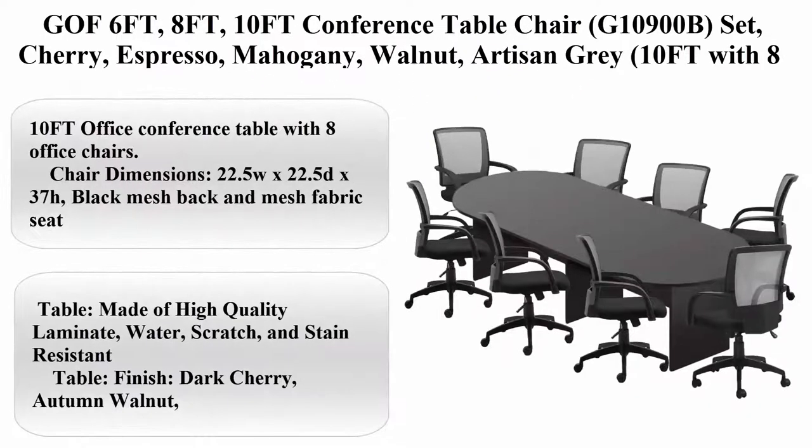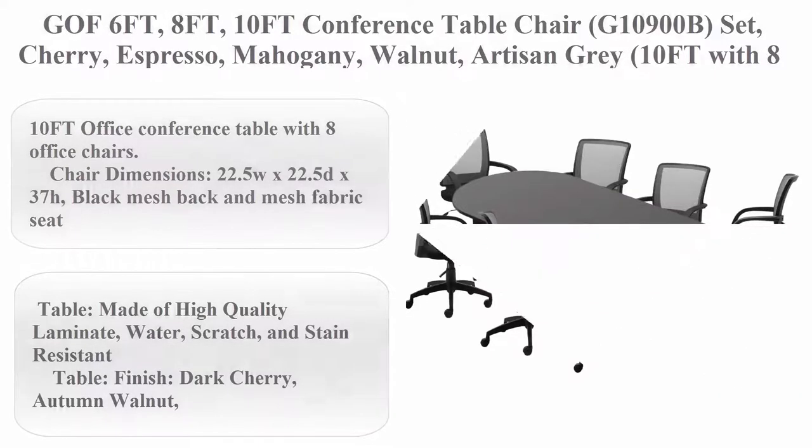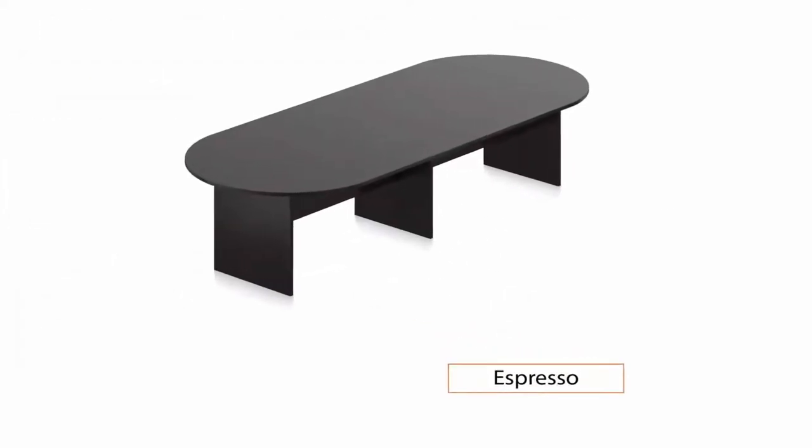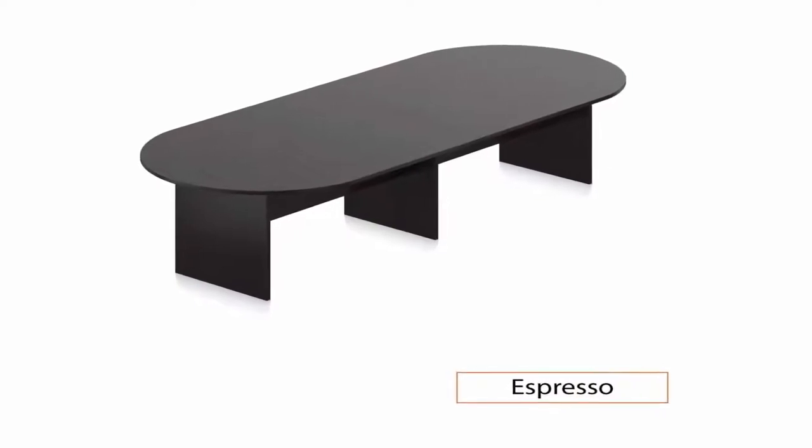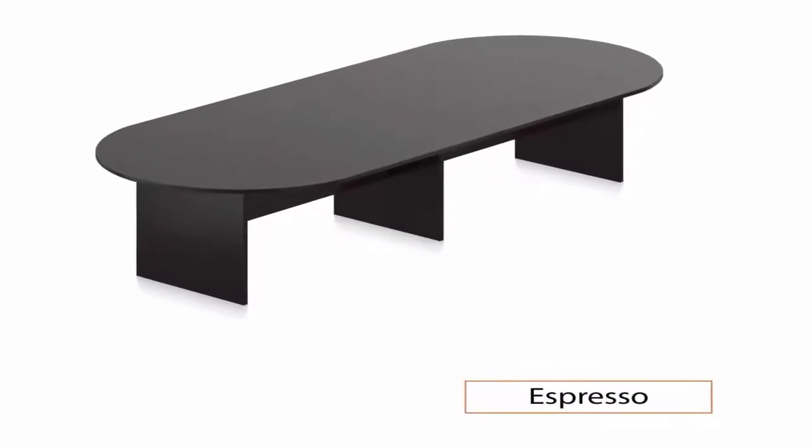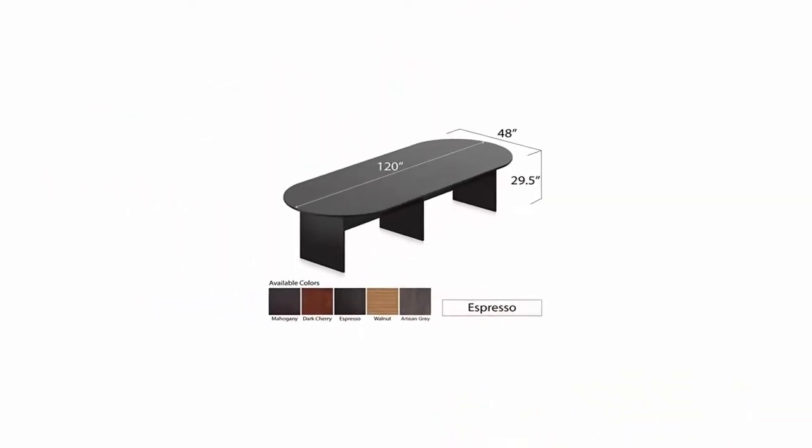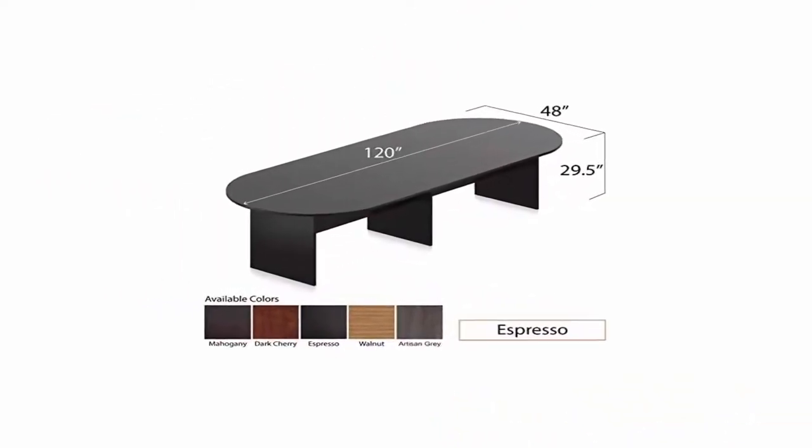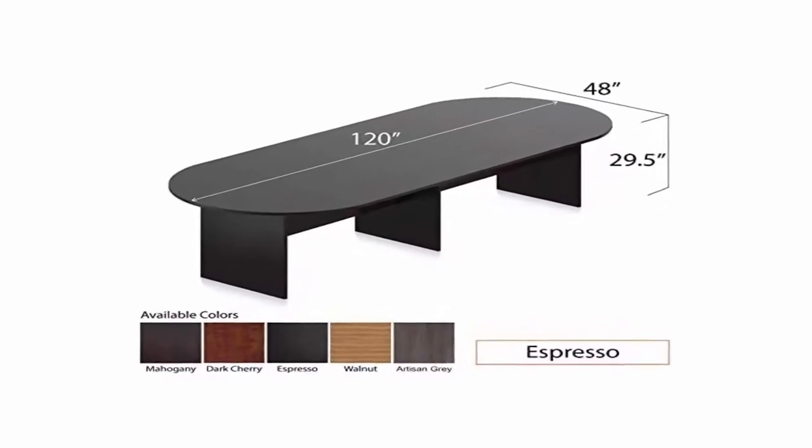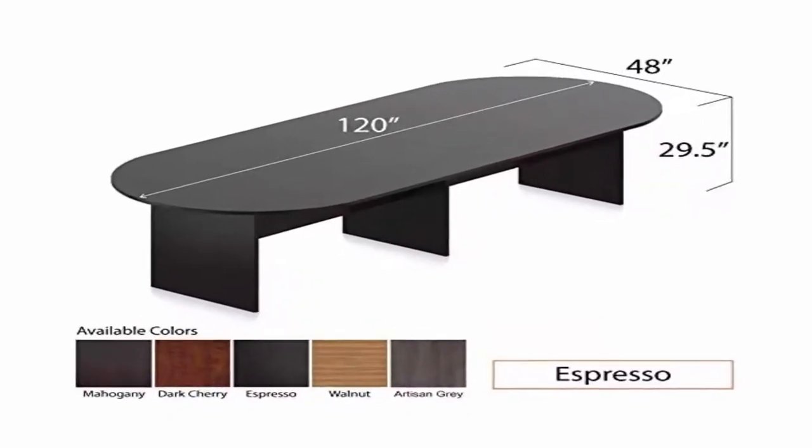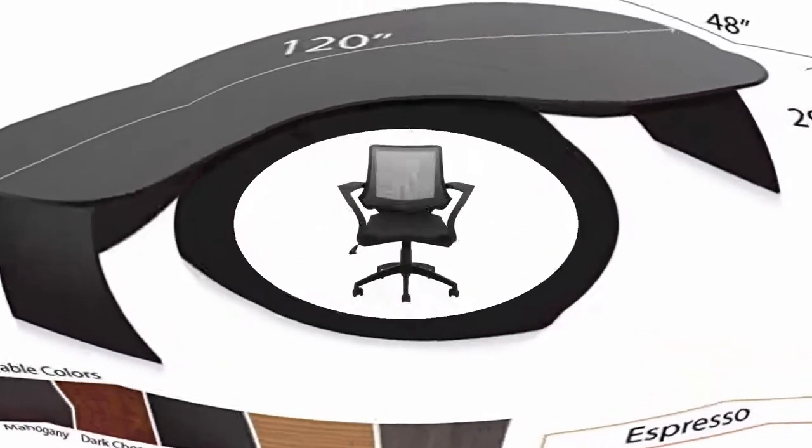GOF 6 feet, 8 feet, 10 feet Conference table chair G10900B Set. Cherry, Espresso, Mahogany, Walnut, Artisan Gray. 10 feet with 8 chairs, Espresso. Color: Espresso. Material: laminate. Furniture Finish: Walnut. Brand: GOF. Seat material type: fabric. About this item: